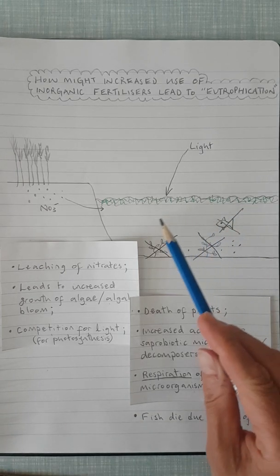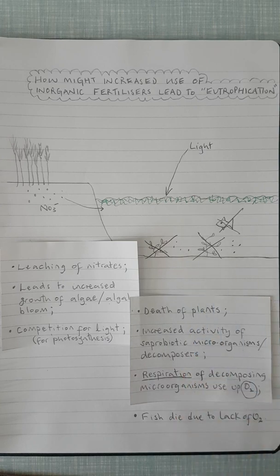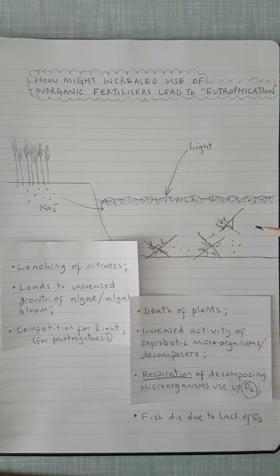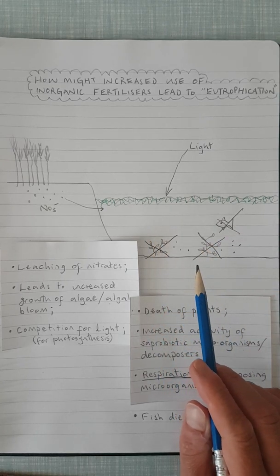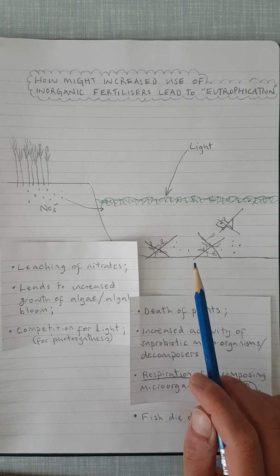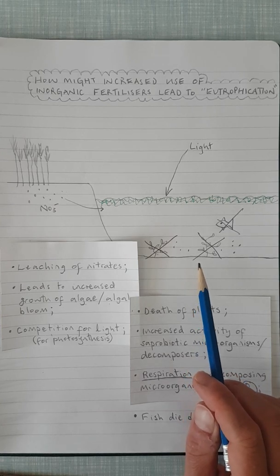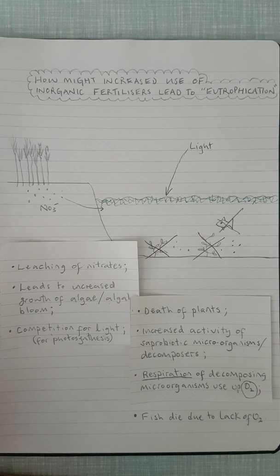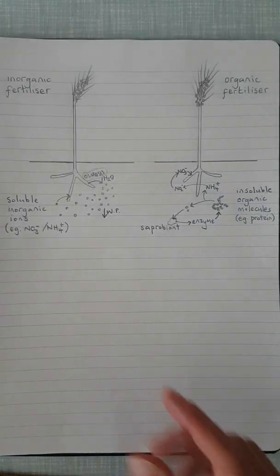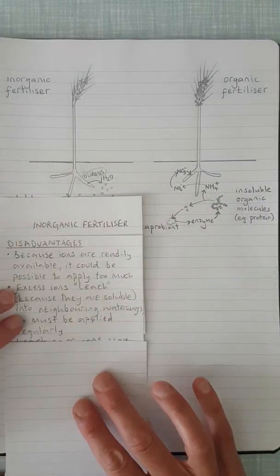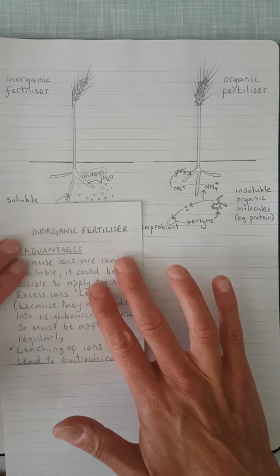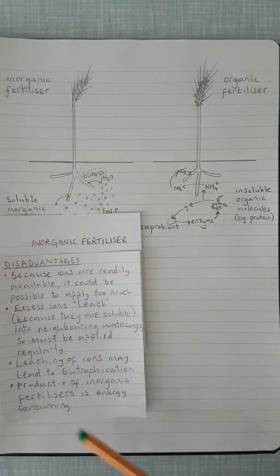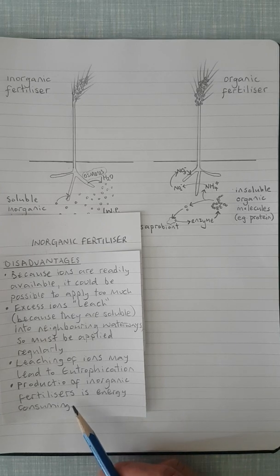So what happens is you've got a lot of dead organisms, you've got a lot of decomposition, you've got a lot of oxygen that's being used up, and eventually this body of water will become oxygen deficient and it will encourage the growth of anaerobic microorganisms. So this is a disadvantage of using inorganic fertilizers. Let's just go back then to the previous page and think about one more disadvantage of using inorganic fertilizers, and that is that it's very energy consuming to produce these inorganic fertilizers.